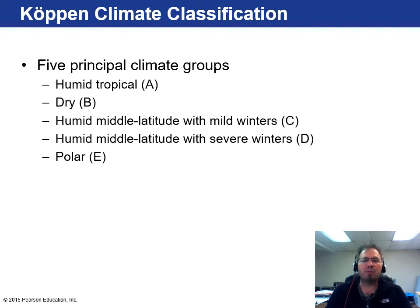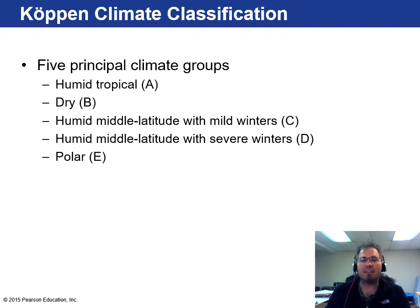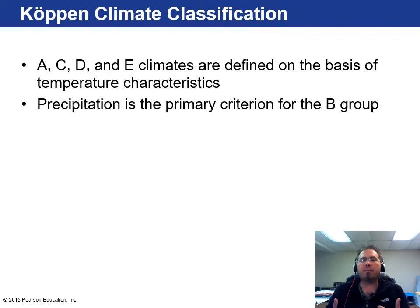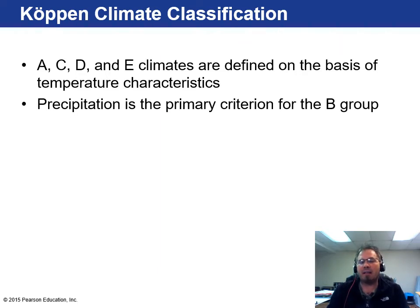There are five principal groups. There's the humid tropical, which makes sense if you're closer to the equator. You have dry climates — deserts and things like that. Humid mid-latitude with mild winters — think of the southern U.S., where they get the occasional winter storm but for the most part it's mild. Then humid mid-latitude with severe winters — that's us in Wisconsin. And then the polar region. Groups A, C, D, and E are defined on the basis of temperature, but precipitation is the primary criterion for the B group — the dry group — because you can still get rain in the desert, but it still belongs in the B group.